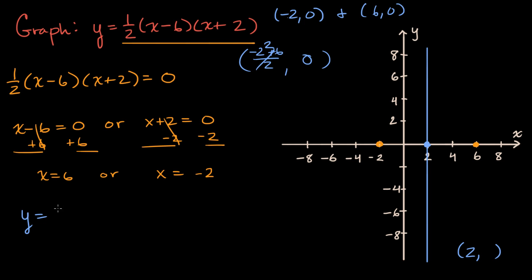So y will equal to one half times, we're going to see when x equals two. So two minus six times two plus two. Let's see. This is negative four. This is positive four. Negative four times four is negative sixteen. So it's equal to one half times negative sixteen, which is equal to negative eight.